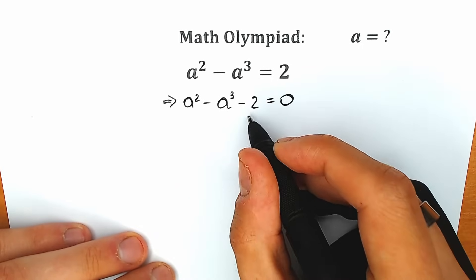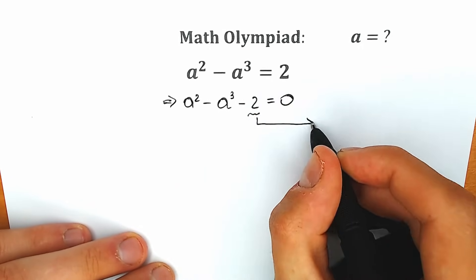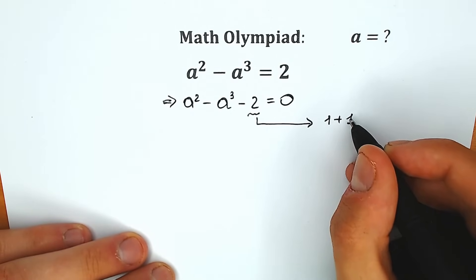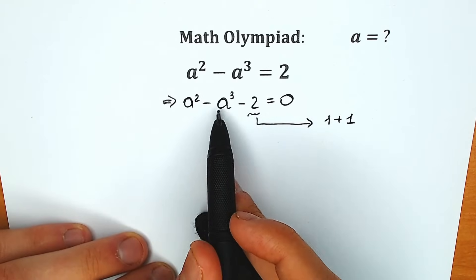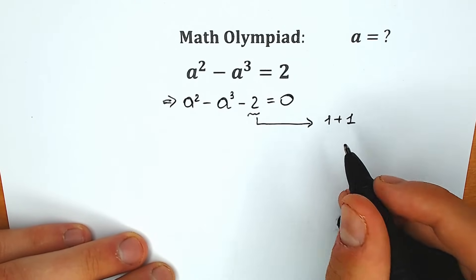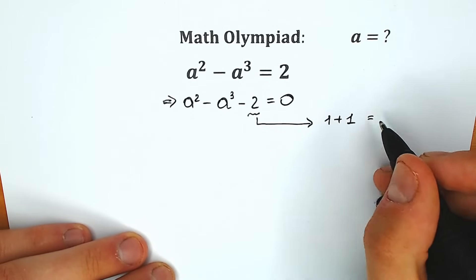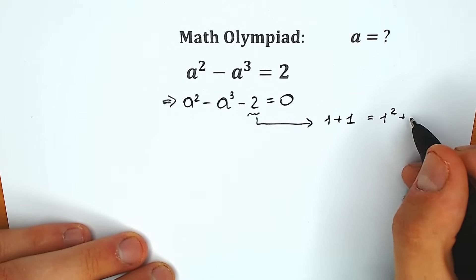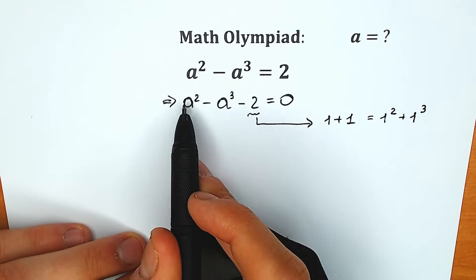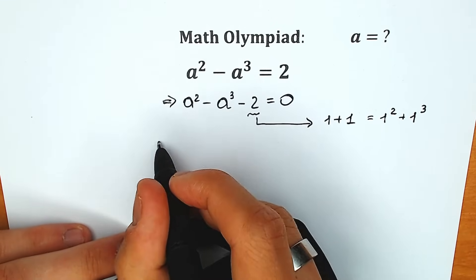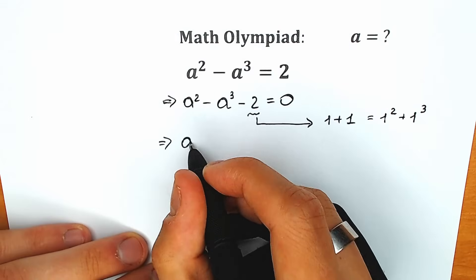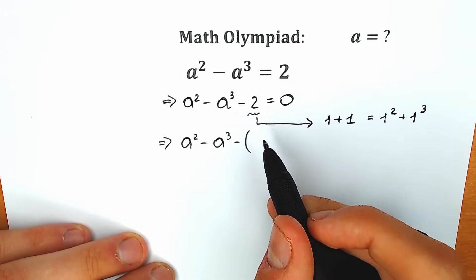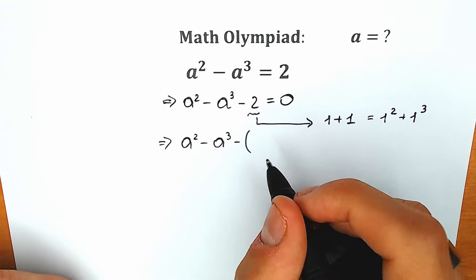First of all, these two — we can write this 2 as 1 plus 1, because we have a to the second power and a cubed. So this 1 we can easily express as 1 squared, and this other 1 we can easily express as 1 cubed, and then we can group squares and cubes. So we're going to write instead of these two, we write 1 plus 1 equal to zero.